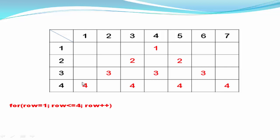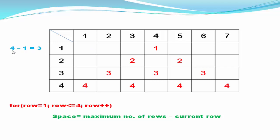The question is how we determine how many spaces are printed in each row. The number of spaces printed in each row is equal to the maximum number of rows minus the current row. Here the maximum number of rows is four, so for the first row we calculate spaces as four minus one equals three spaces. In the first row, three spaces will be printed.